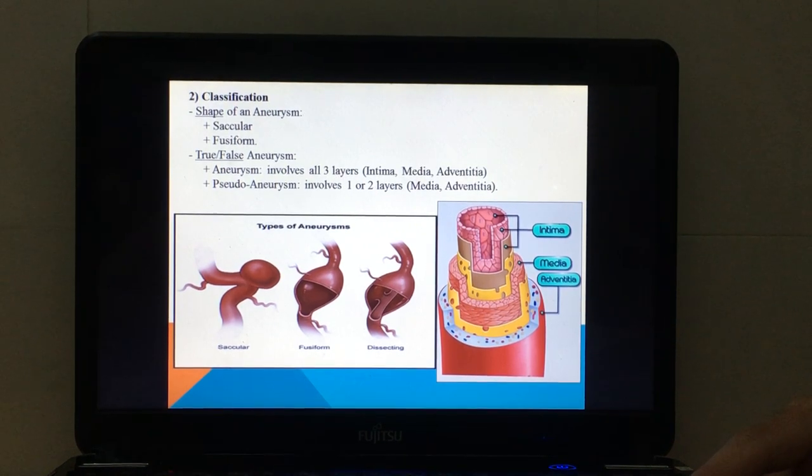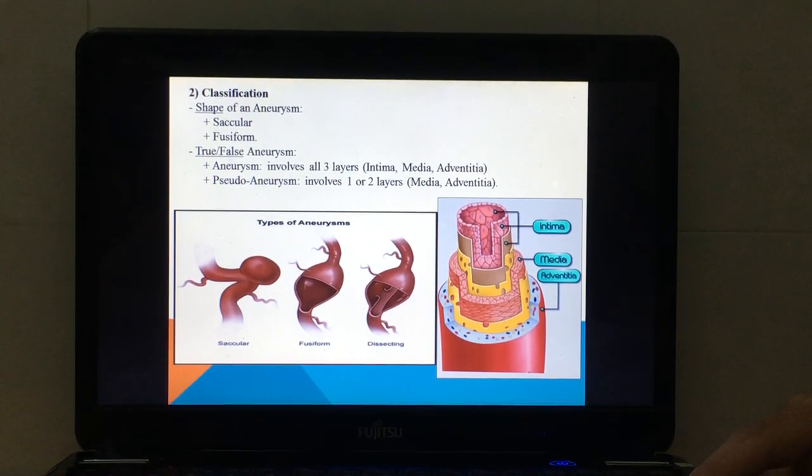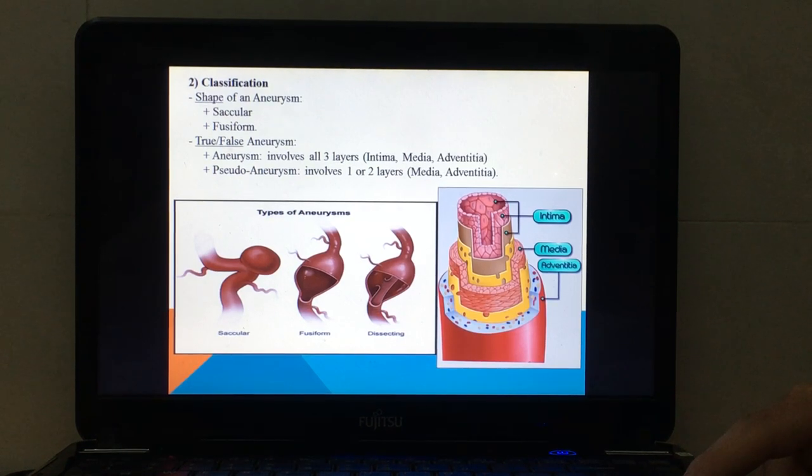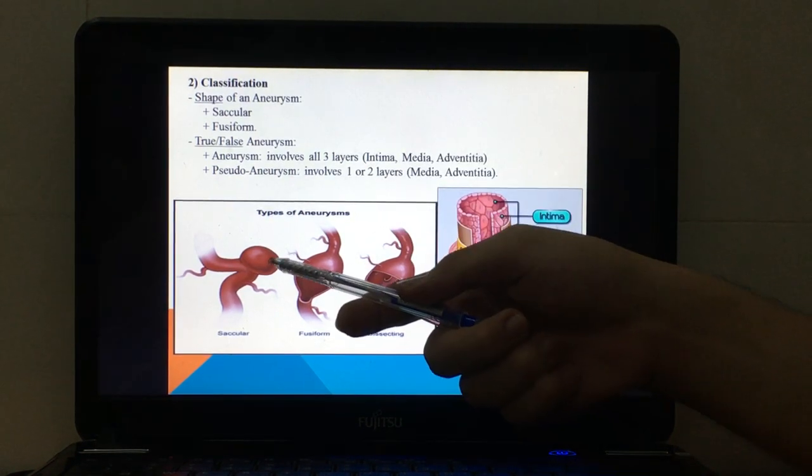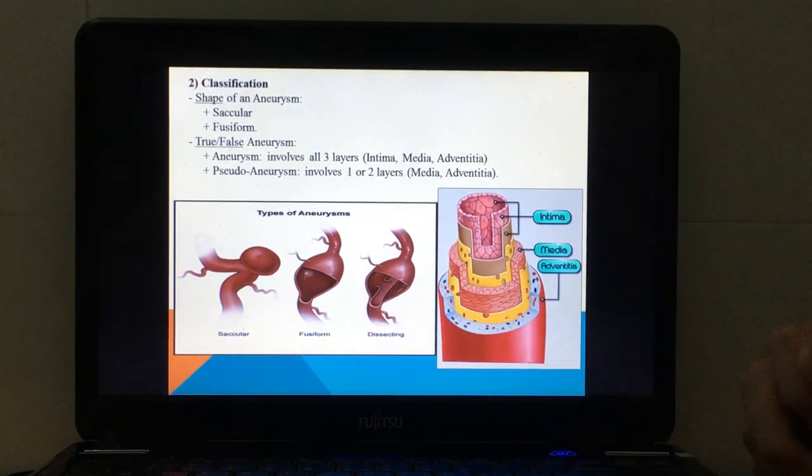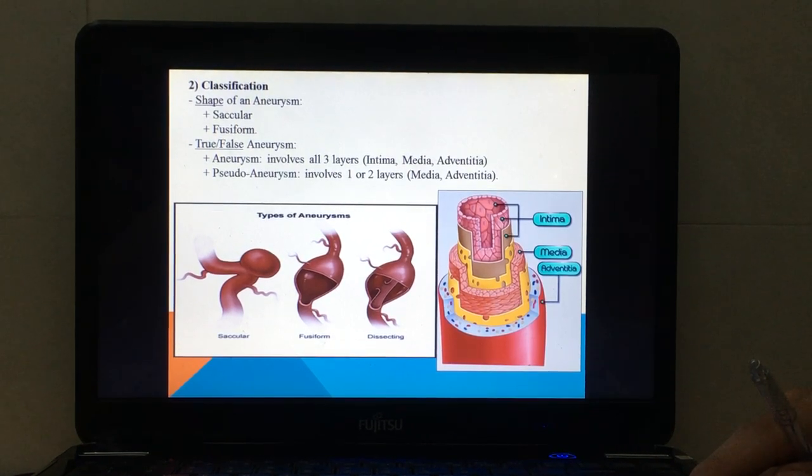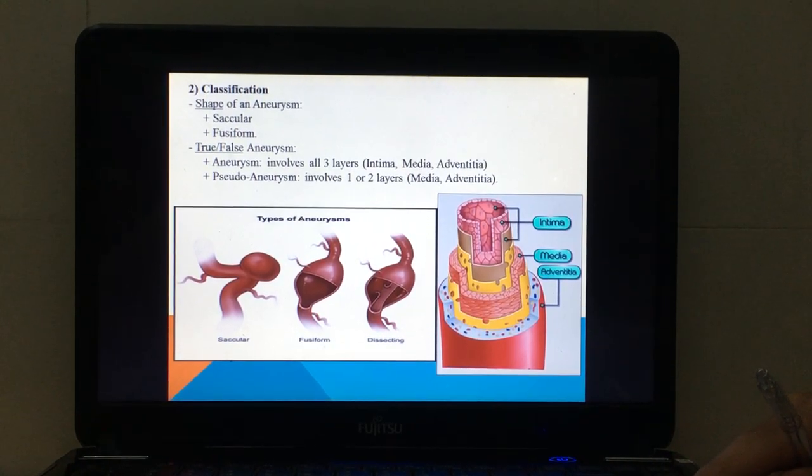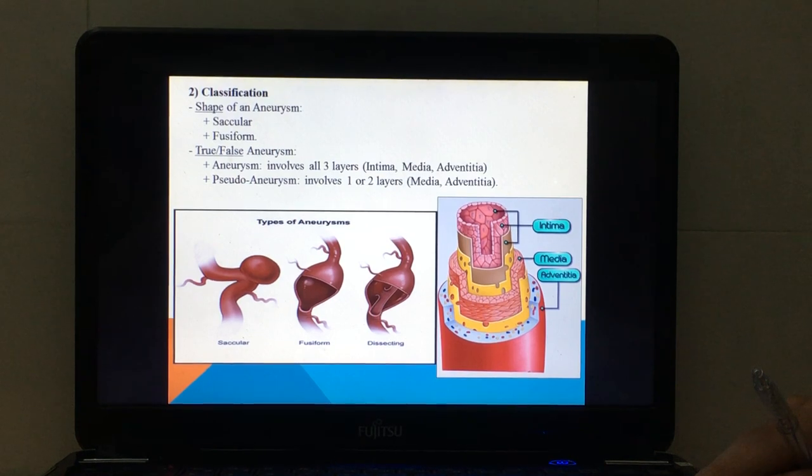This is the classification of aneurysms. We base it on the shape, so we have saccular and fusiform. If we base it on true or false aneurysm, we have a real aneurysm and a pseudoaneurysm.